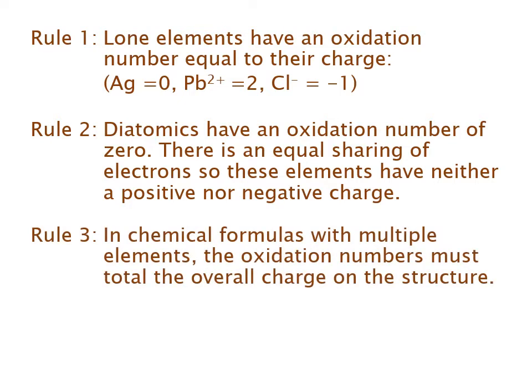Rule three: in chemical formulas with multiple elements, the oxidation numbers must total the overall charge of the structure. So if I have KMnO₄, K is taking a plus one, Mn is taking a plus seven, and each oxygen is taking a minus two, so that all those charges add up to zero. If I had PO₄³⁻, P takes a plus five and each O takes a minus two, so that the overall oxidation numbers add up to minus three. And with NH₄⁺, N would be taking a minus three and each hydrogen would be taking a plus one, so all their oxidation numbers add up to a positive one.